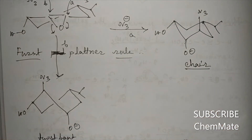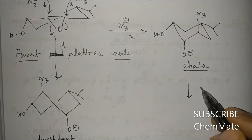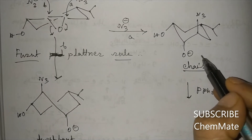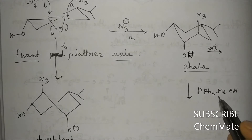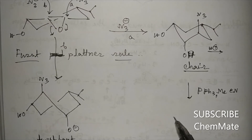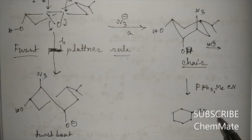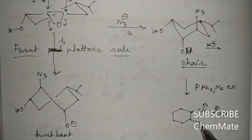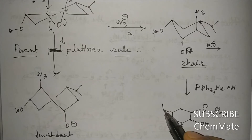The intermediate formed after NaN3 ring opening now has N3 and OH groups. When treated with PPh3 (the Staudinger reaction), it will take one proton, converting to OH. Drawing this in the conformational form: N3 is present, OH is below the plane, and the isopropyl group is below the plane.